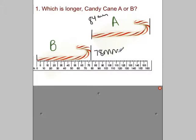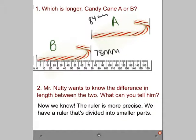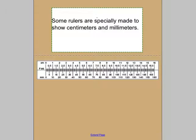Alright, so Mr. Nutty, we can now answer your question. And you wanted to know what candy cane was longer. And it would be A. We now have a more precise ruler. It's more accurate. And Mr. Nutty would definitely choose A because it's a whole whopping 6 millimeters longer. So that's pretty cool that he can choose A now.